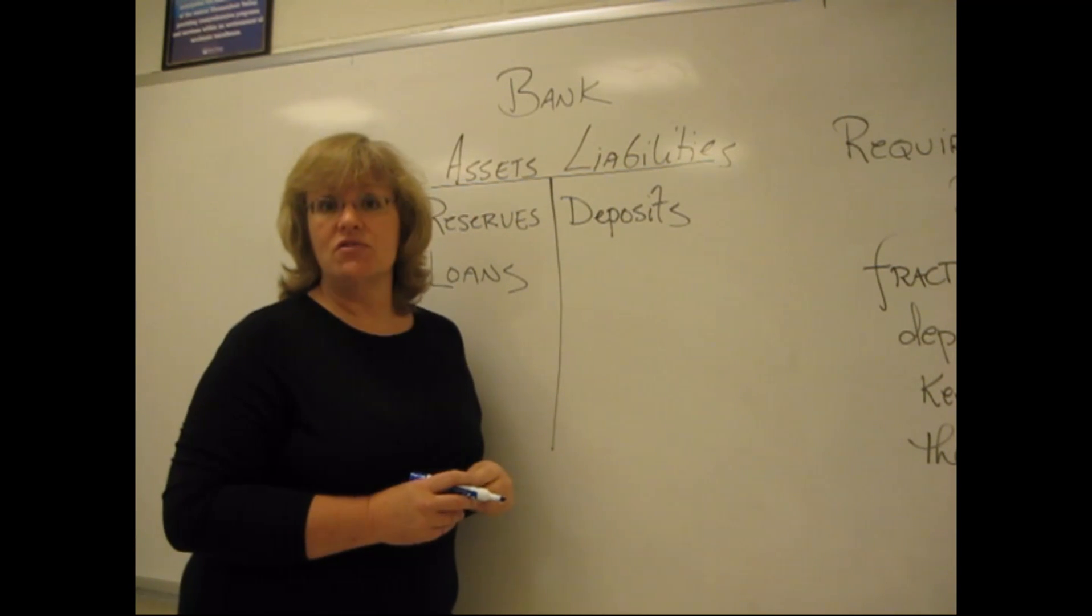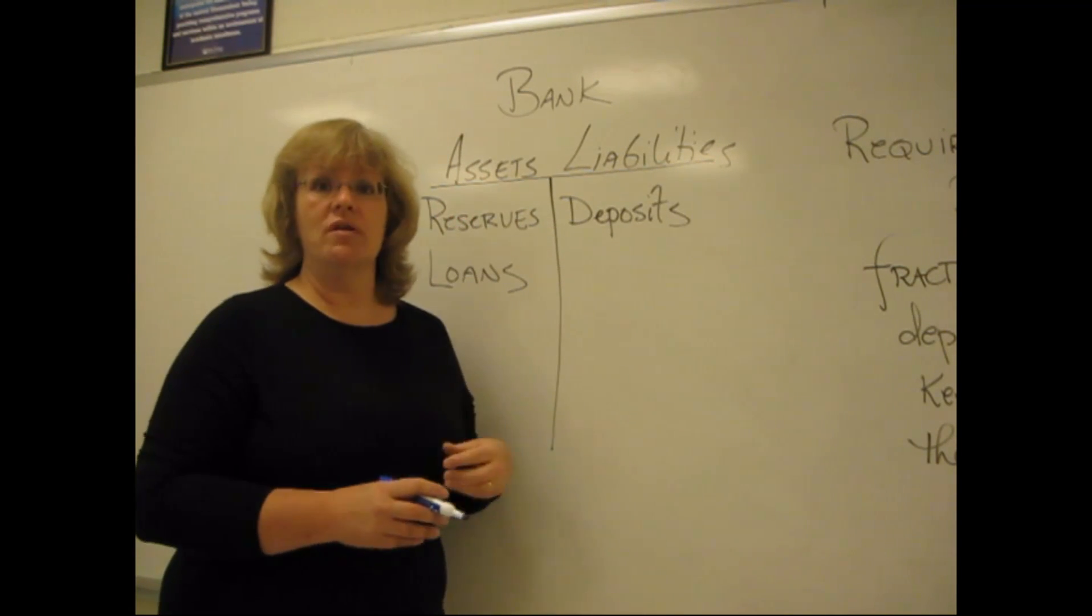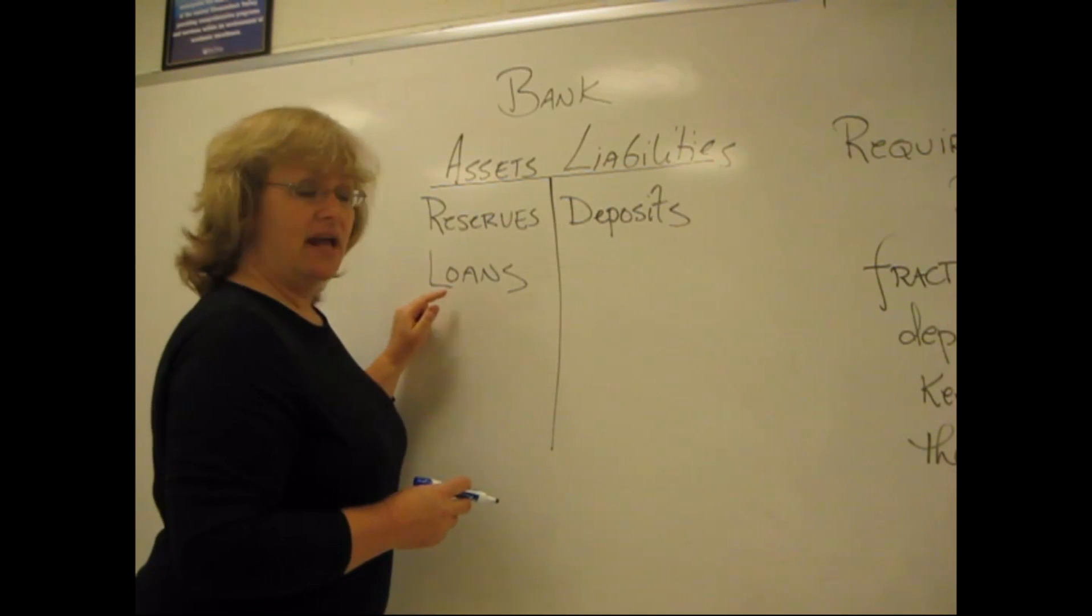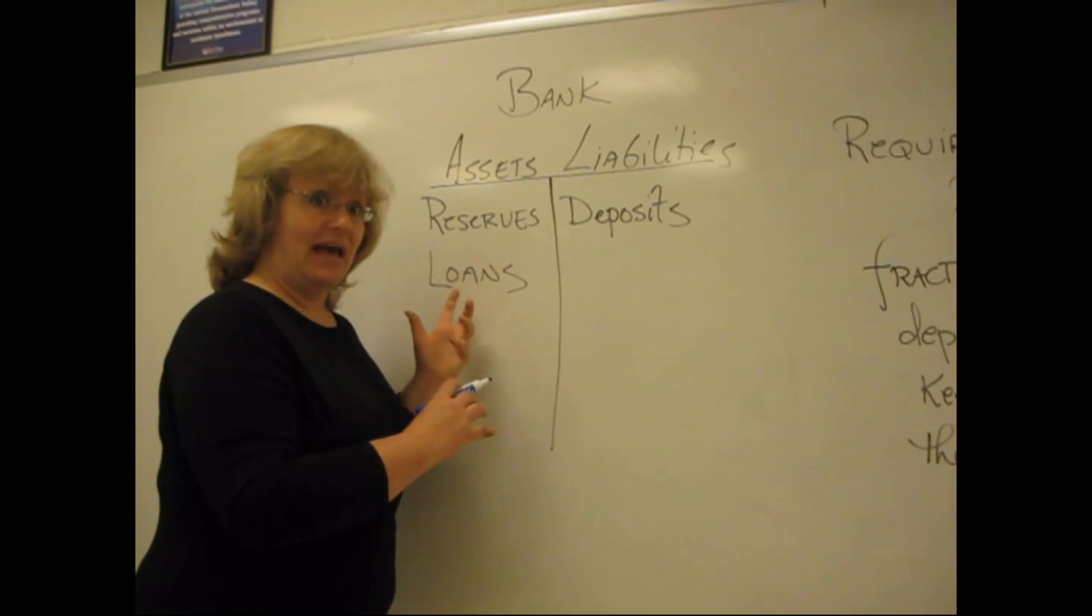Remember that we're talking about this from the viewpoint of the bank, not from you or I. On the asset side of the bank, the two that we're going to be most concerned about for this example are bank reserves and loans. These are loans that the bank makes, the bank as the lender.